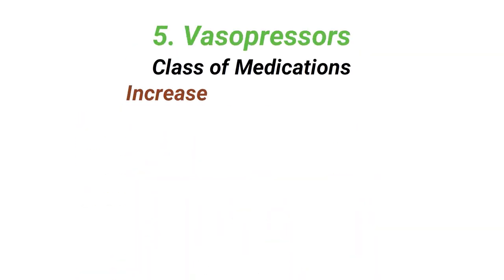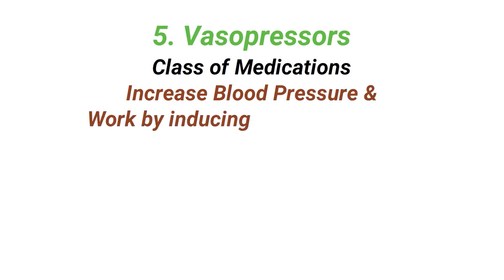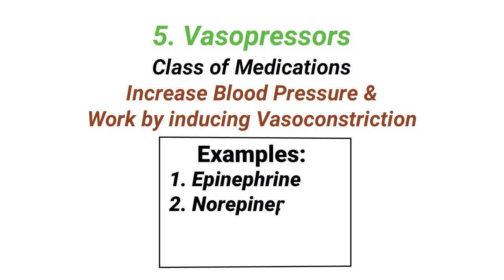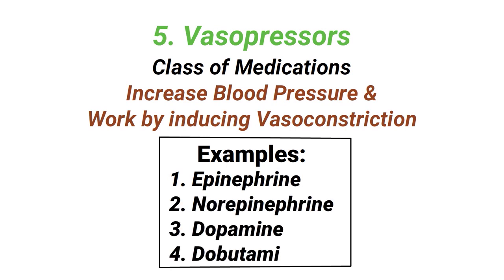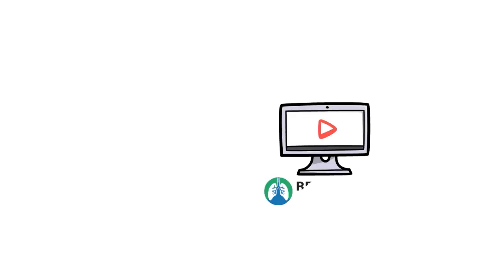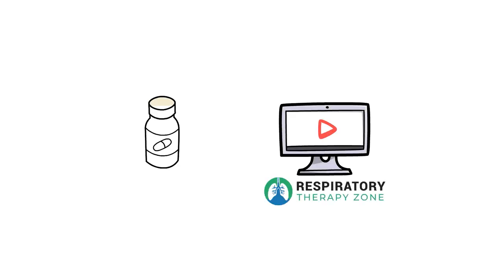Vasopressors are a class of medications that increase blood pressure and work by inducing vasoconstriction. Some examples include epinephrine, norepinephrine, dopamine, and dobutamine.